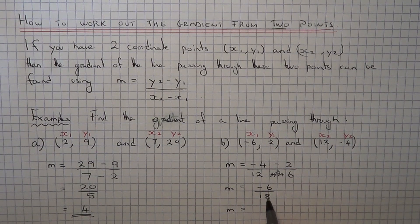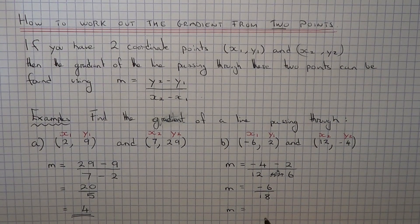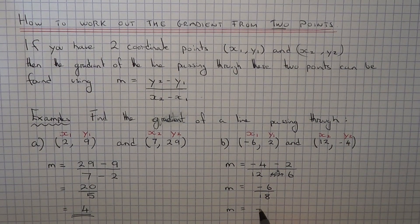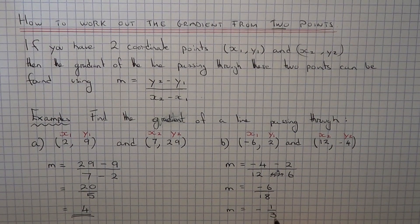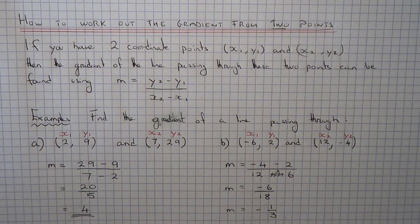So here we've got a fraction so we can simplify it, 6 eighteenths, we'll simplify to a third and we can take out the negative, so the gradient will be minus one third.